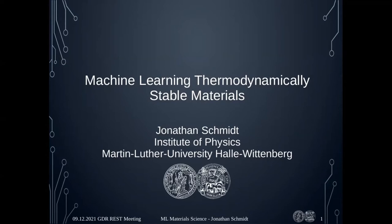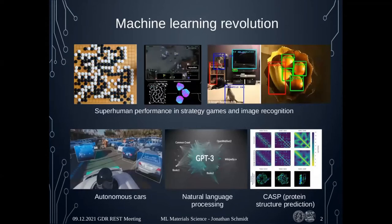Jack already talked a bit about machine learning in general, so we've had a revolution in a lot of different fields over the last years. Jack already mentioned image recognition and image segmentation, which is now completely dominated by machine learning algorithms. Then we have games like Go or StarCraft, which were maybe more in the media, where we now have superhuman performances by ML algorithms. Then we have autonomous driving, which has also made a lot of progress, mostly based on machine learning.